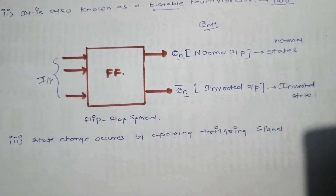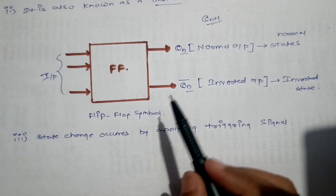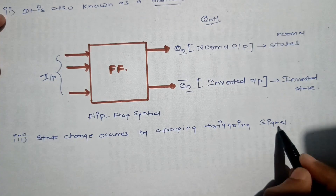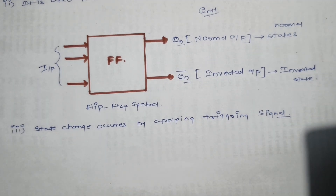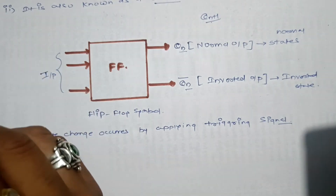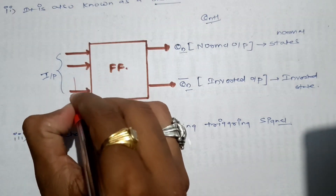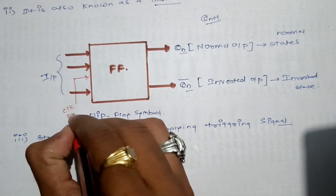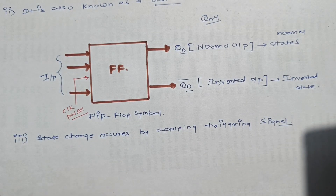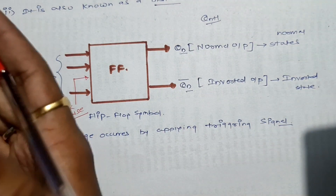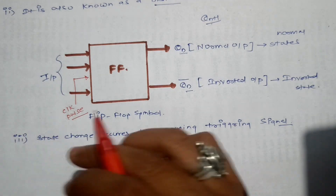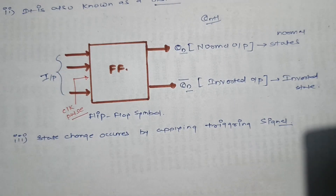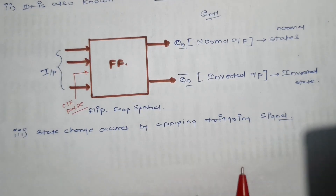The state change of a flip-flop — meaning the value of QN or QN bar — can change by applying a triggering signal. Whenever we apply an external signal in the form of a clock pulse, the clock switches between 0 to 1 or 1 to 0. Based on that, the state change can occur. So to change the state of a flip-flop, we need to change the clock signal each time.